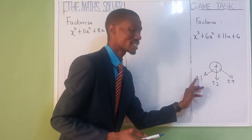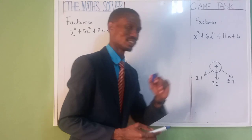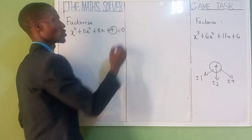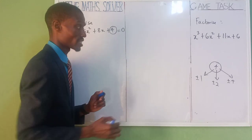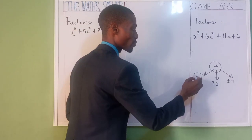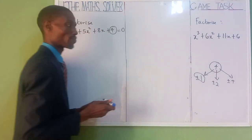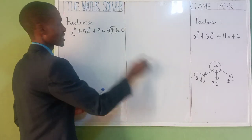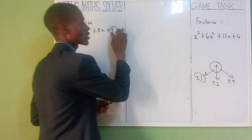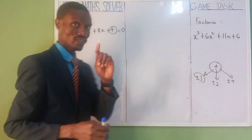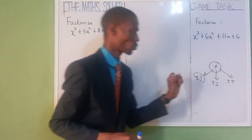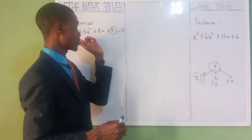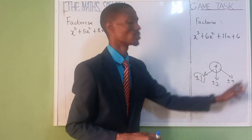Now let's pick them one by one. How do you factorize this? Your answer must be equal to 0. Let's start using them one by one. The first one is plus 1. You are going to substitute your x with 1 in all of this and check whether it's going to be equal to 0. If it's not equal to 0, you use minus 1. If that's not equal to 0, you use plus 2, and so on.